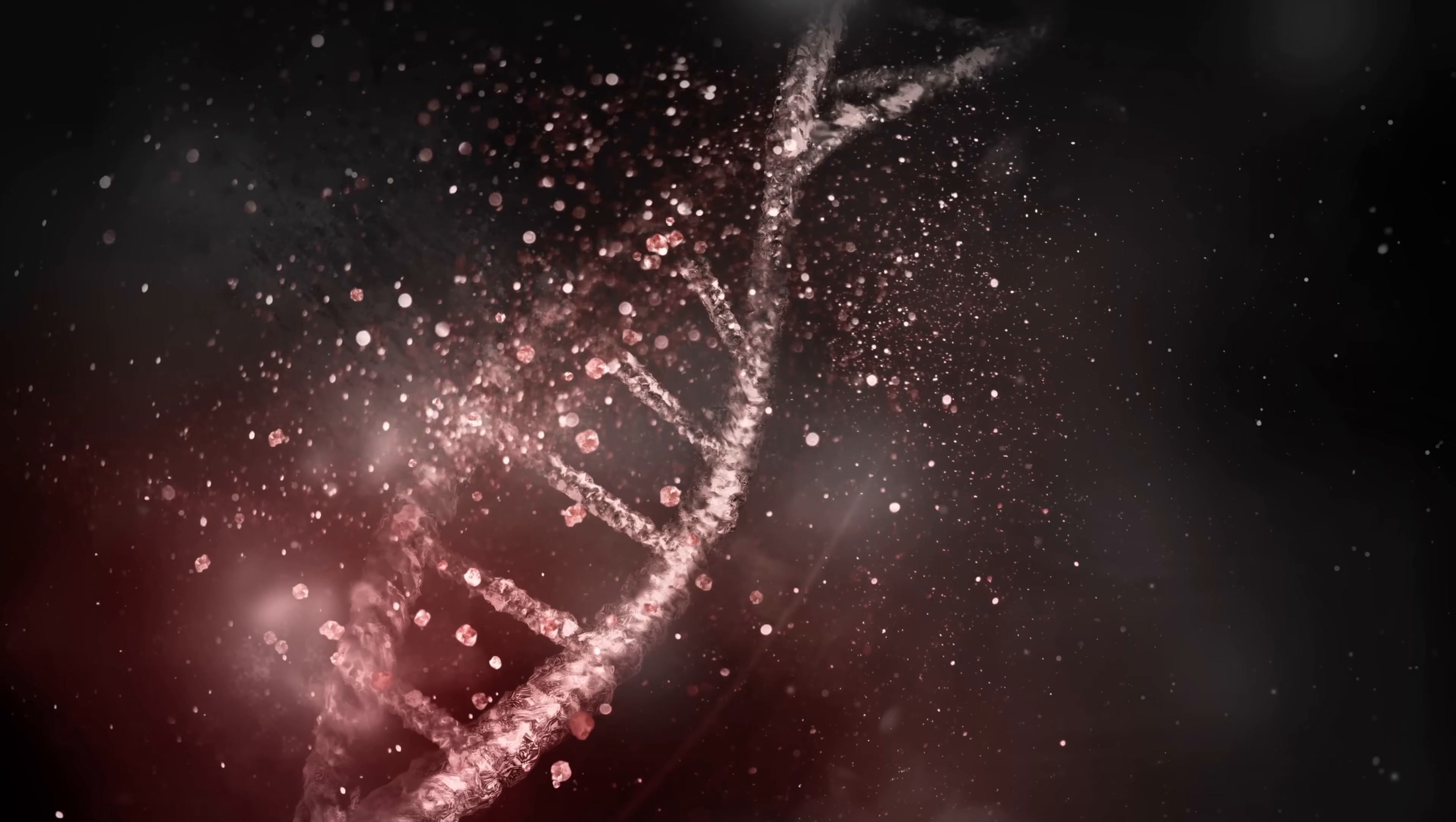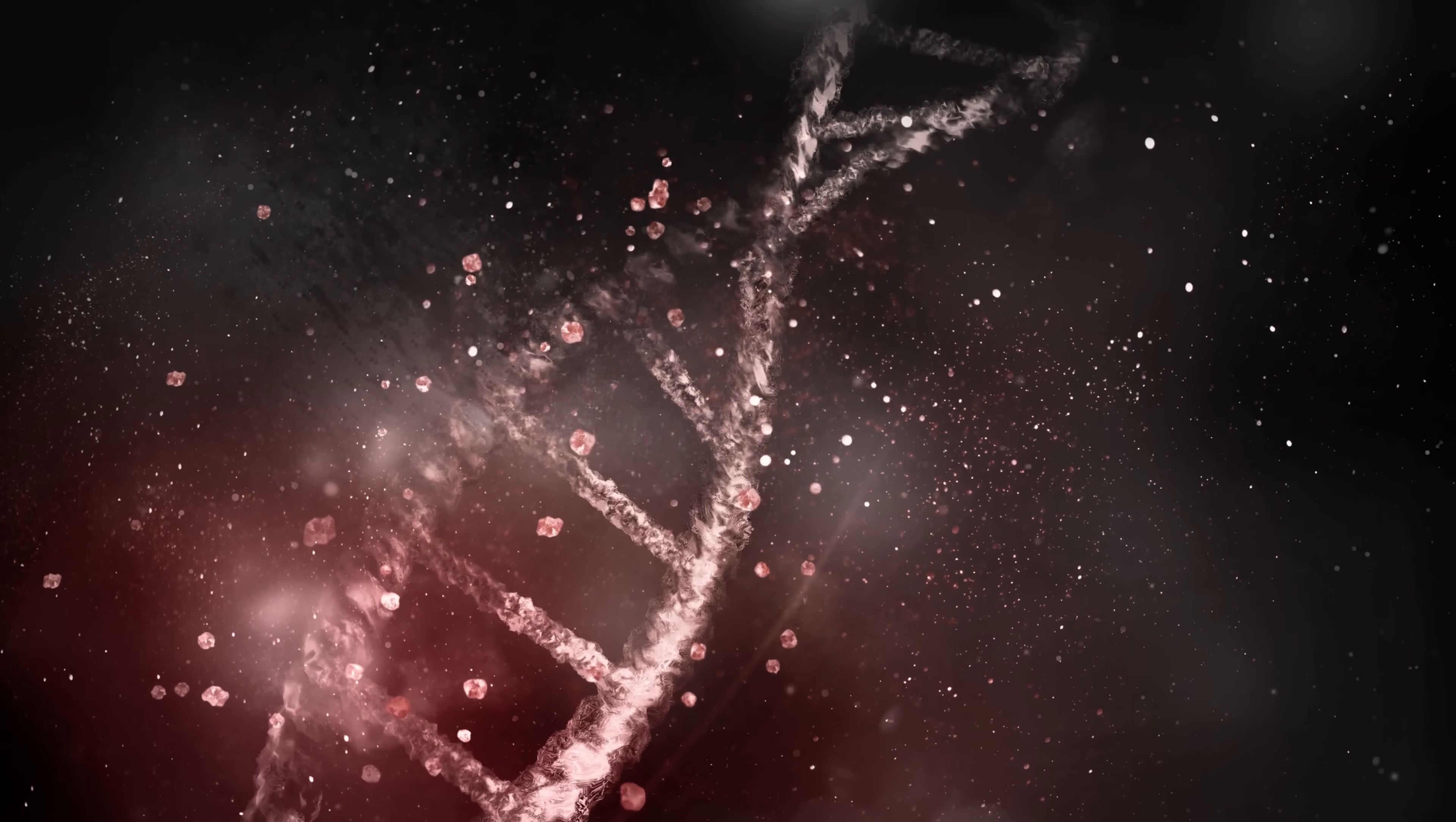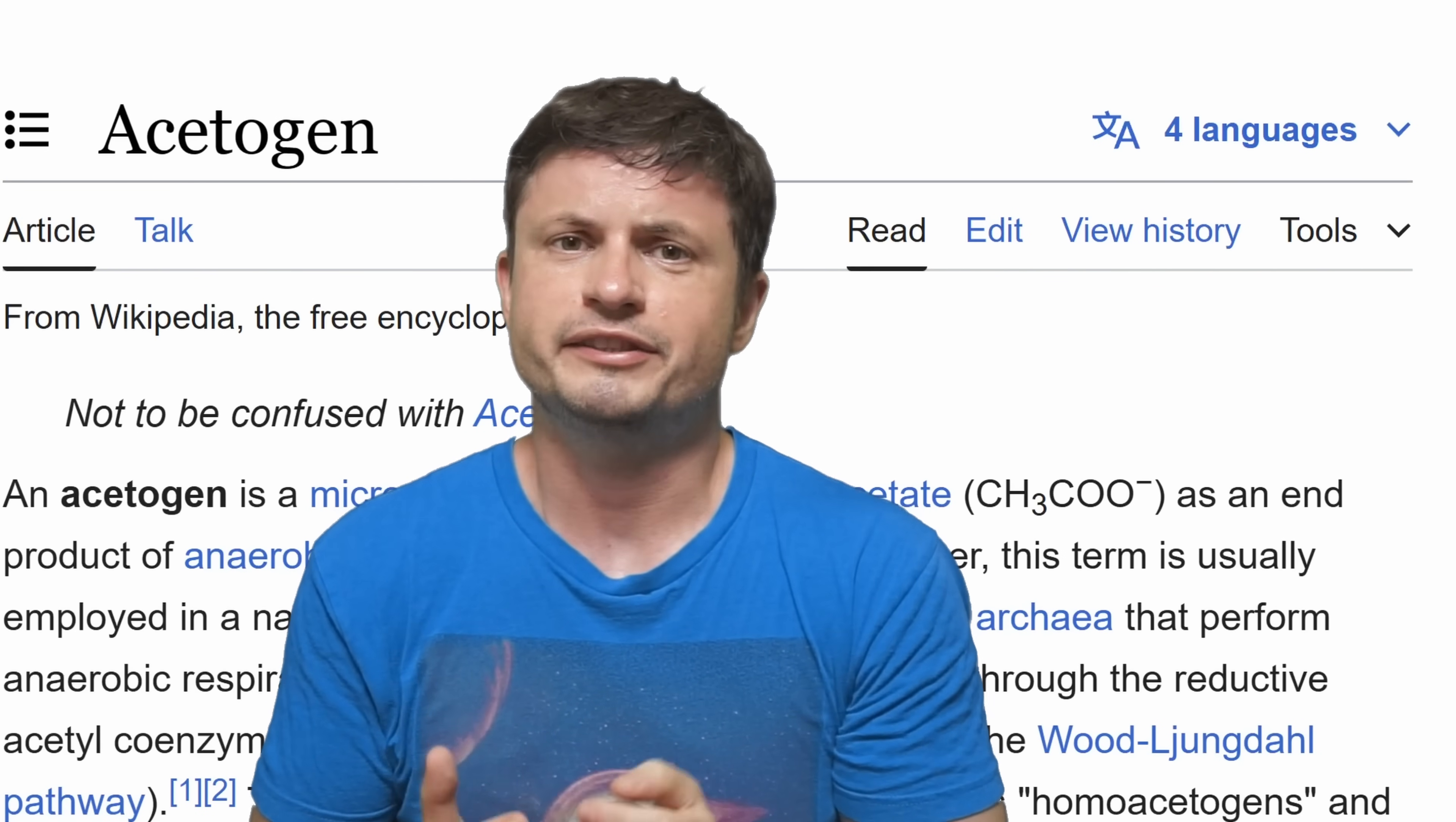But its genome that potentially contained approximately two and a half million bases, including about 2600 proteins, potentially allowed this organism to become what's known as an acetogen.